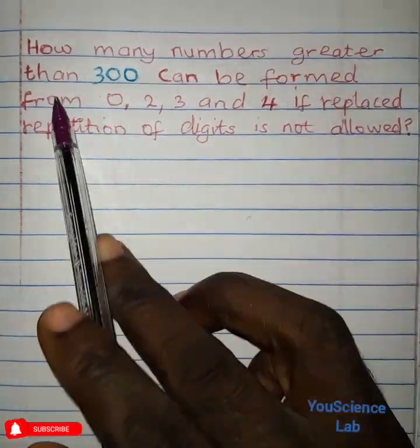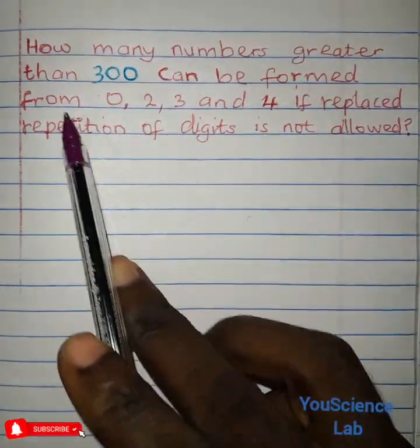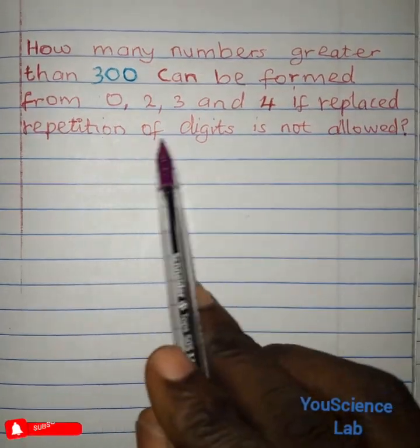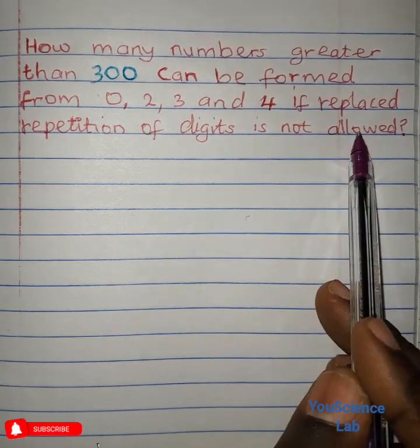How many numbers greater than 300 can be formed from 0, 2, 3 and 4 if repetition of digits is not allowed?